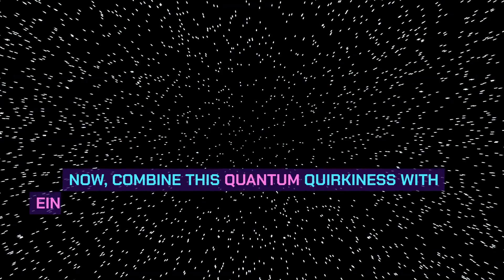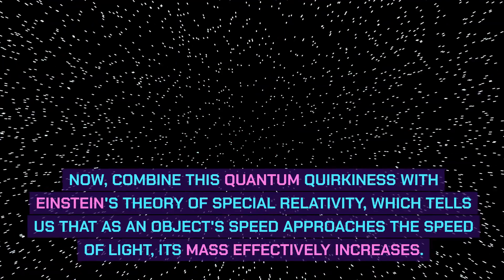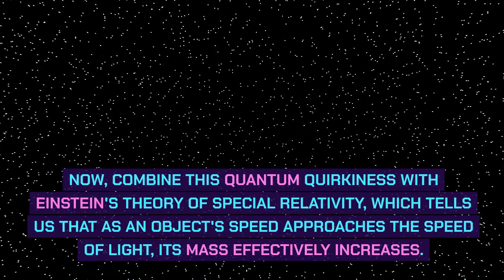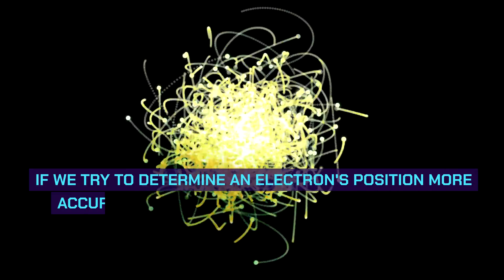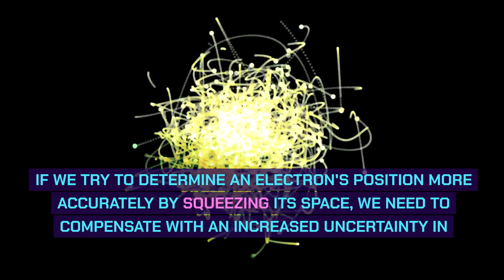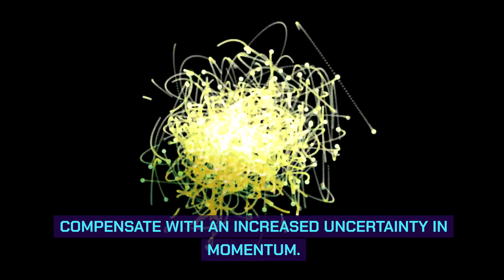Now combine this quantum quirkiness with Einstein's theory of special relativity, which tells us that as an object's speed approaches the speed of light, its mass effectively increases. If we try to determine an electron's position more accurately by squeezing its space, we need to compensate with an increased uncertainty in momentum.